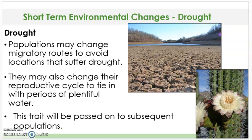The first short-term change we're going to talk about is drought. Populations may change migratory routes to avoid locations that suffer drought. They may also change their reproductive cycle to tie in with periods of plentiful water. This trait will be passed on to subsequent populations, meaning the next generation.